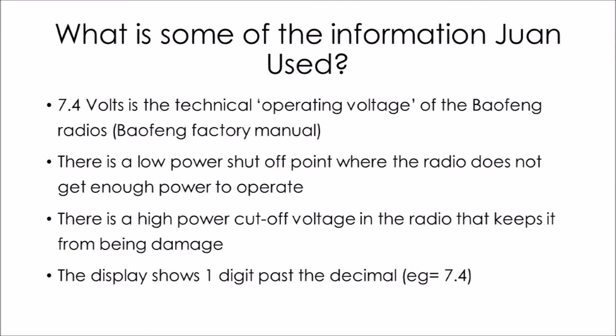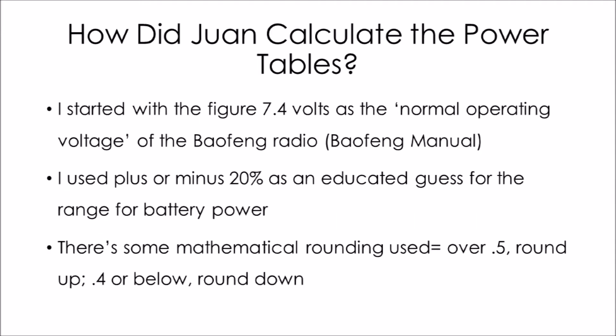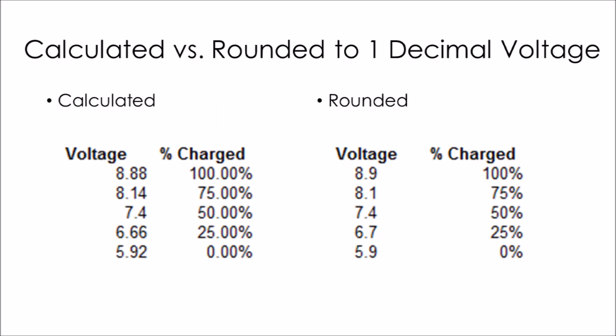Alright, what assumptions did I make when I was calculating the tables? I started with the figure 7.4 volts - that is always going to be the half full point on the tables. And I used a range of plus or minus 20% of 7.4 volts as my educated guess for battery power. And there will also be some mathematical rounding - anything over five will round up, anything four or below round down.